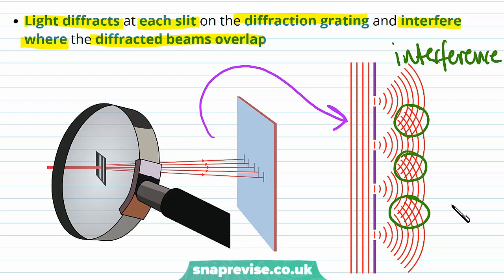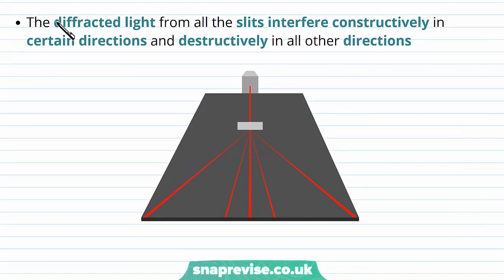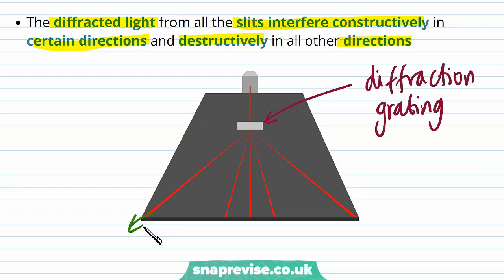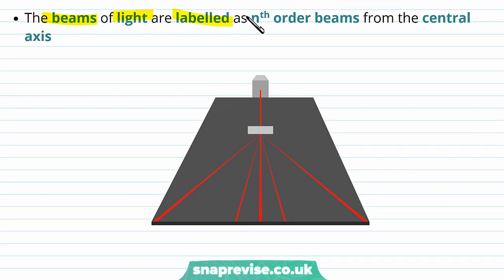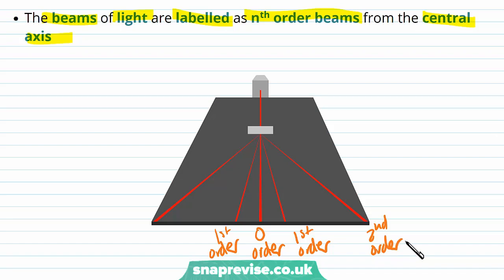The diffracted light from all the slits interferes constructively in certain directions and destructively in all other directions. Here we can see our light and diffraction grating from a different angle — the red lines show constructive interference, and everywhere else we have destructive interference. The beams of light are labeled as nth order beams from the central axis. The central beam is the zero order, then moving outward we have the first order beams, second order beams, and so on.